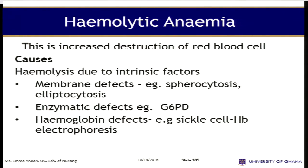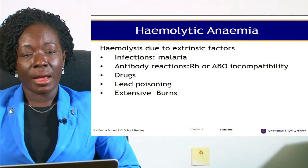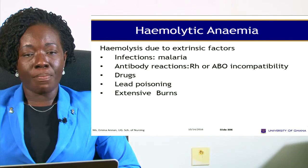The third type is hemolytic anemia — increased destruction of the red blood cells. The red blood cells are formed but they are being destroyed. Causes are due to intrinsic and extrinsic factors. Intrinsic factors include membrane defects, enzyme defects, and hemoglobin defects such as sickle cell or hemoglobin electrophoresis. Extrinsic factors include infections such as malaria, poisoning, drugs, lead poisoning, extensive burns, and antibody reactions such as Rh or ABO incompatibility.